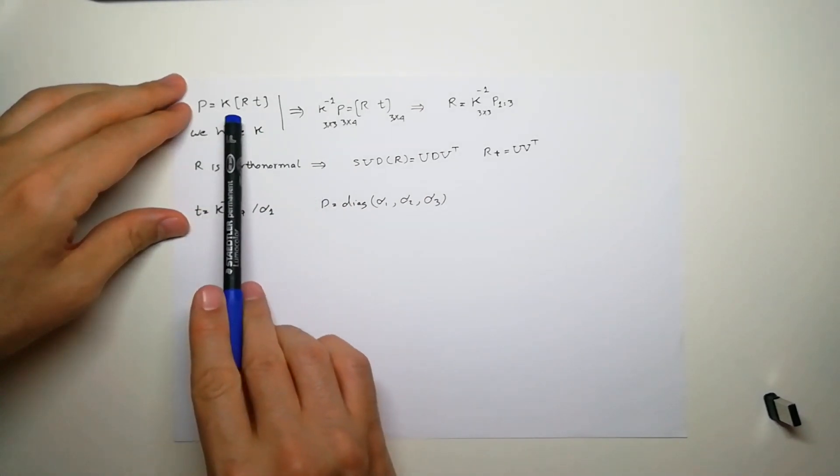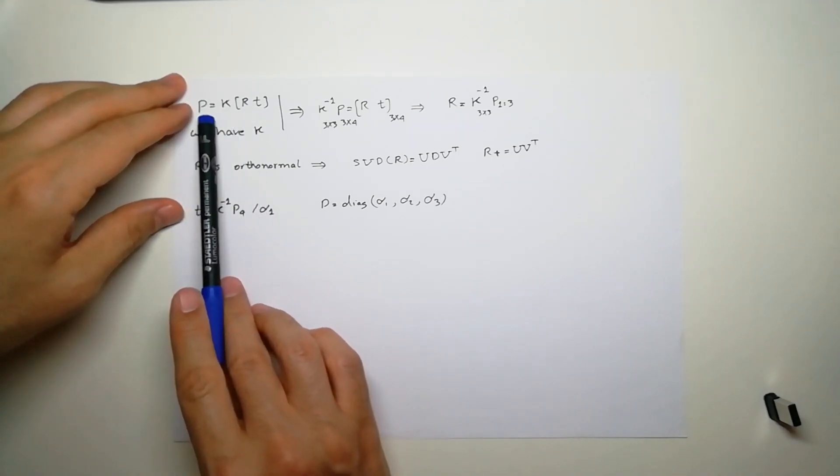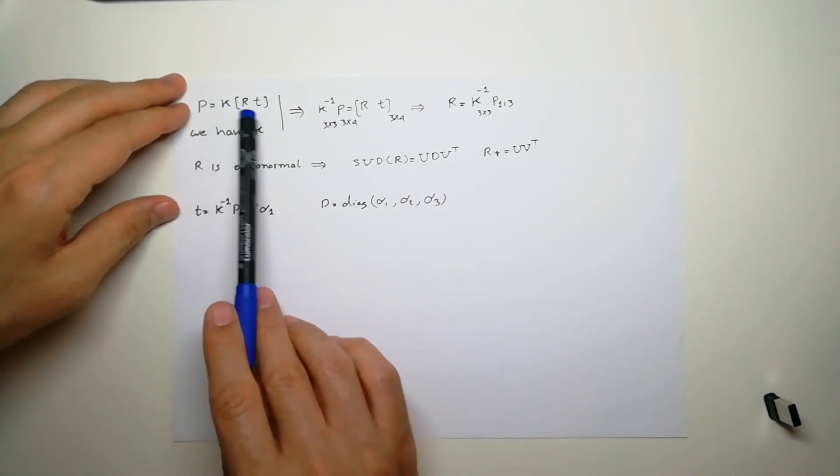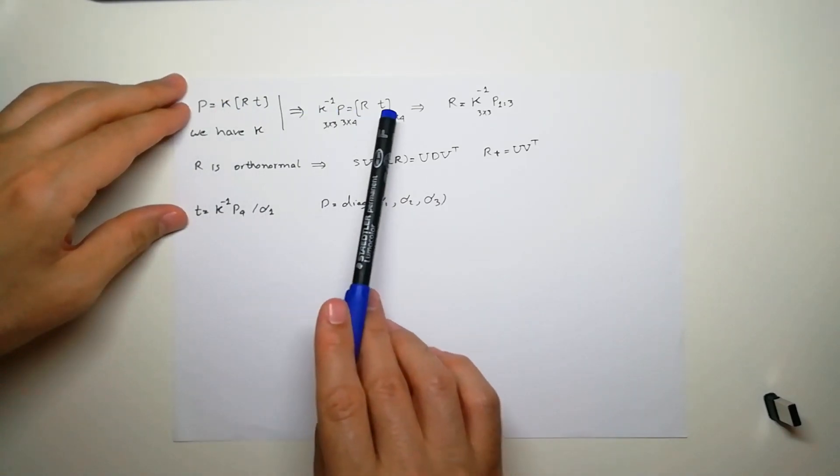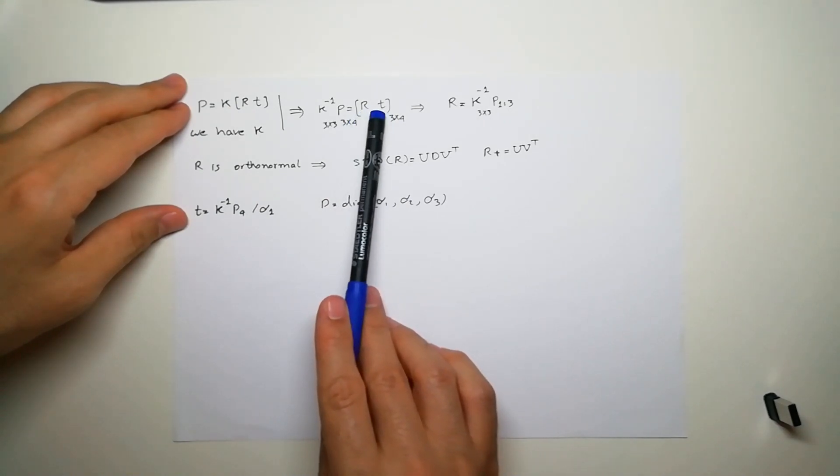We have the p from SVD, and if I multiply both sides by K inverse, I will get R and t. This is 3 by 3, this is 3 by 1, so it's going to be 3 by 4.